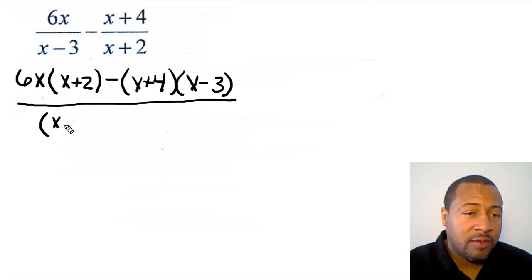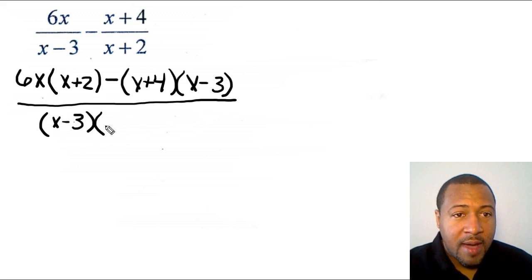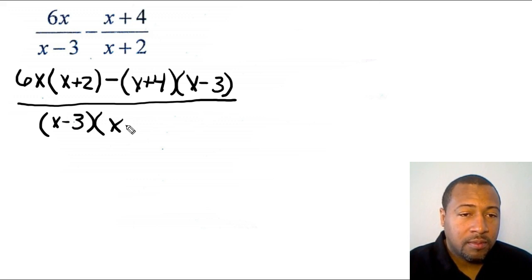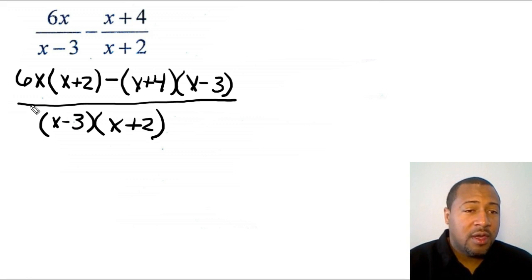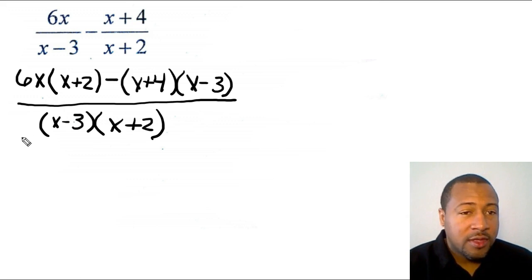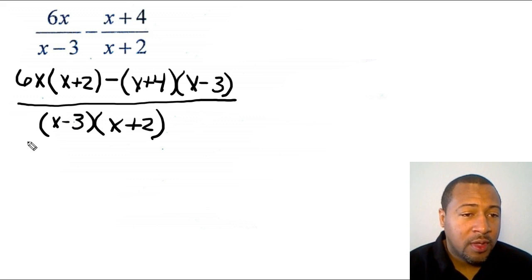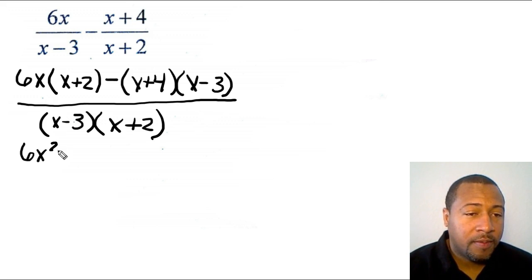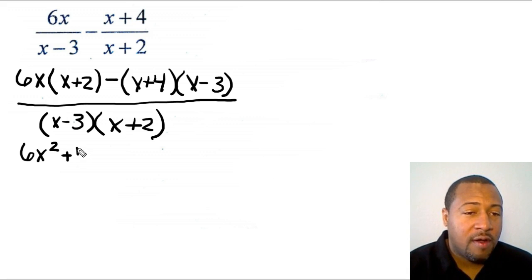The denominator is (x − 3) multiplied by (x + 2). Now I have to simplify everything at the top. My denominators are now the same, so I can start simplifying. I distribute 6x: 6x times x gives 6x², and 6x times 2 gives positive 12x.